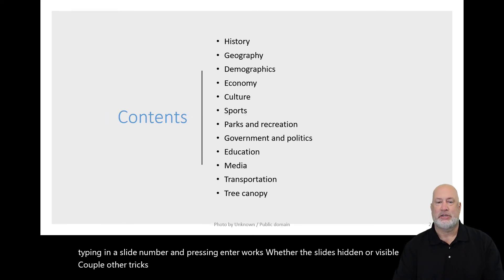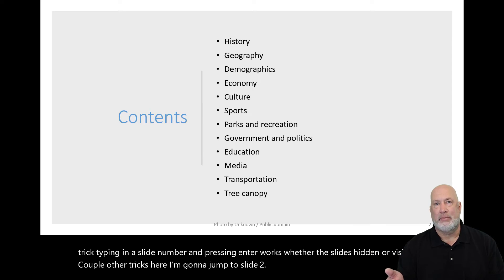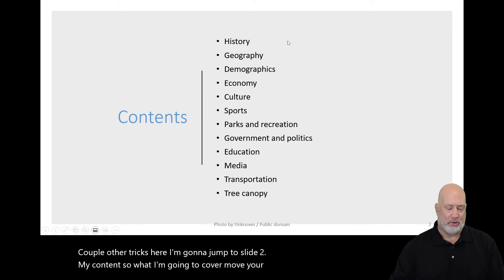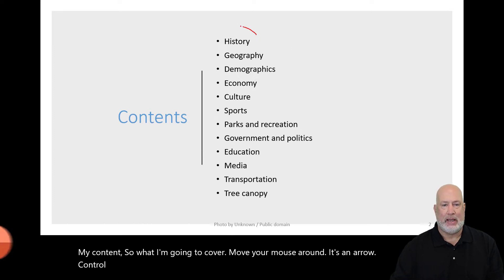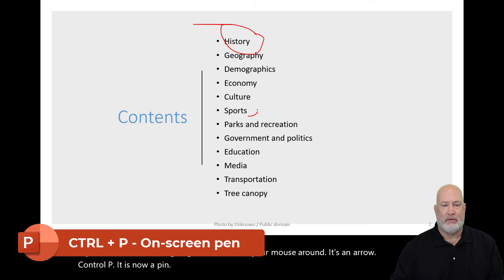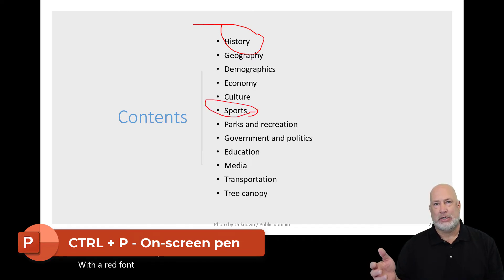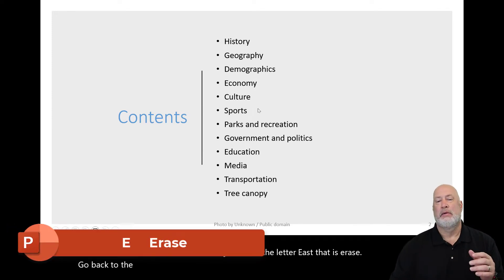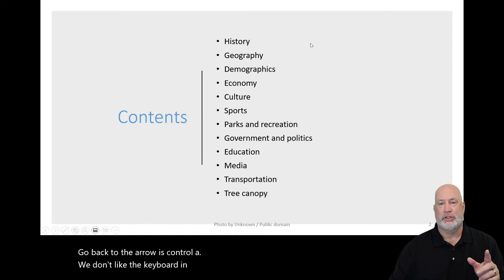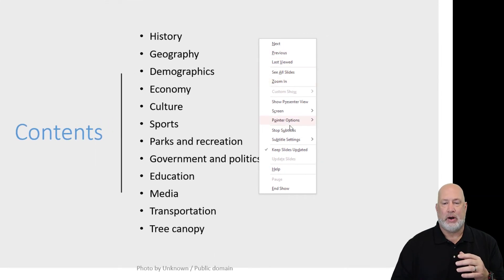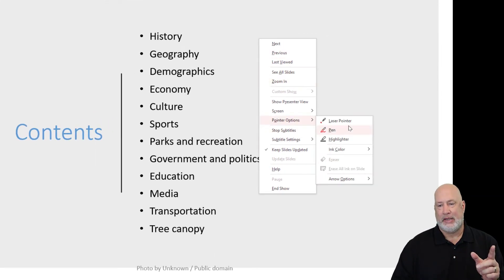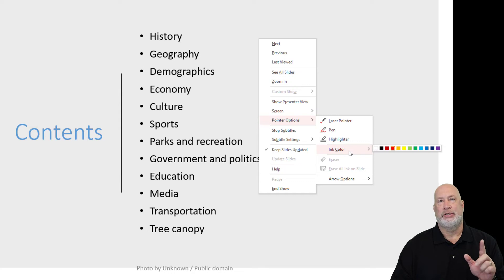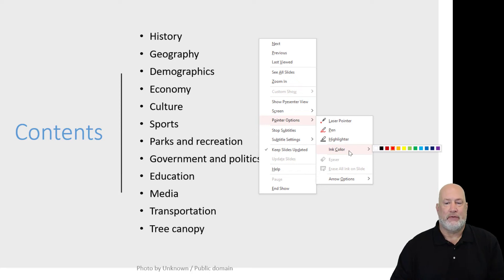A couple other tricks here. I'm going to jump to slide two — my contents of what I'm going to cover. Move your mouse around — it's an arrow. Control+P: it is now a pen with a red font color. Want to erase what I just did? It's the letter E — that is erase. Go back to the arrow with Control+A. If you don't like the keyboard and you're a mouse person, just simply right click, pointer options — pen, that is Control+P. There's your laser pointer, highlighter, and you can change your ink color. When you're presenting, no one else would see this as long as you're in slideshow. This is just for you, not for your audience.